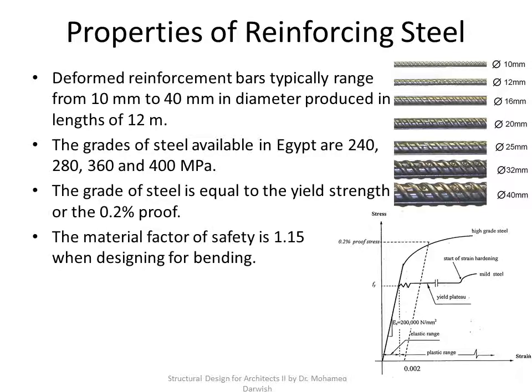Because steel is manufactured in a factory and not on site, it has much better quality control applied to it. This is why the material factor of safety for steel is 1.15, which is less than that of concrete — you don't have the necessity of a high material factor of safety. The modulus of elasticity of steel is approximately 200 GPa for any type of steel.